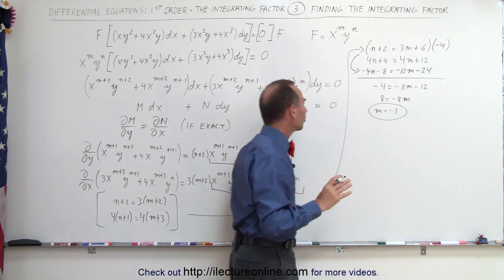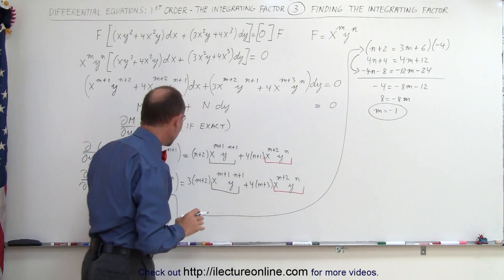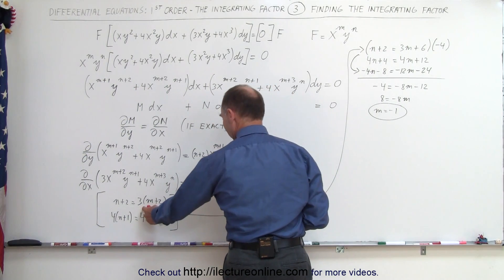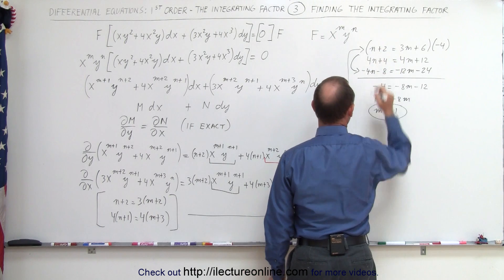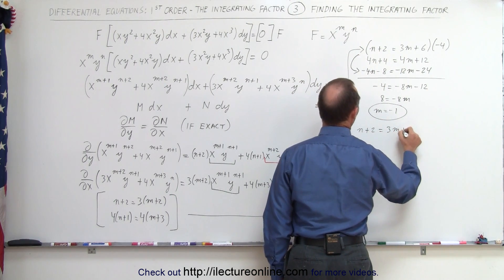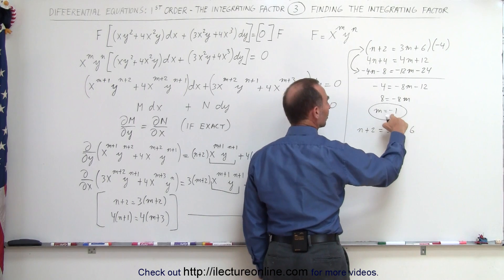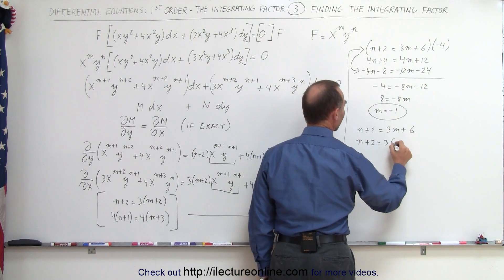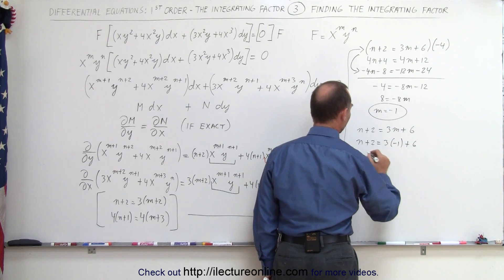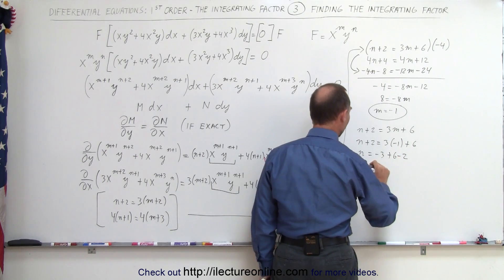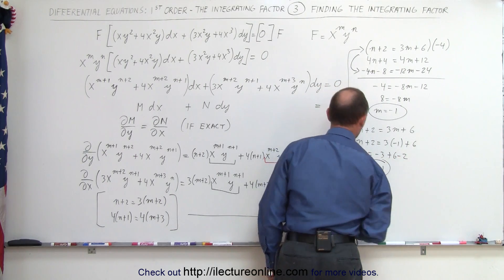Now I need to find n. Using the first equation, n + 2 = 3m + 6, and substituting m = −1: n + 2 = 3(−1) + 6 = 3, so n = −3 + 6 − 2 = 1. Therefore n = 1.